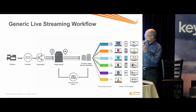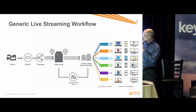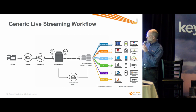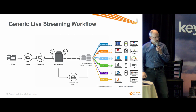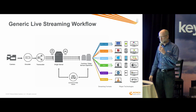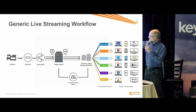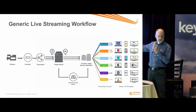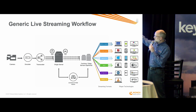Those streams are pushed into a server which can store a copy of everything for on-demand use later. It will then push out to a bunch of edge servers — sometimes a content delivery network. You may have heard of Akamai, Limelight, or Level 3. Those edge servers will deliver the content globally, and possibly in multiple formats.